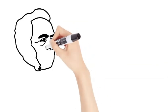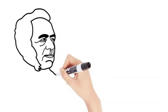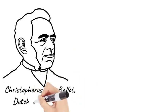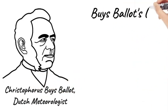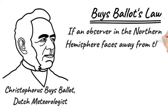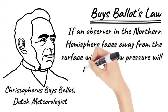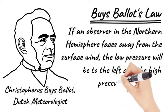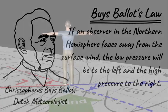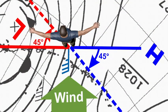Now that we've covered some basic storm characteristics, we can proceed with storm avoidance strategies. The first step is to estimate the direction of the storm center from the observer. This is best done using Buys-Ballot's Law, which states that if an observer in the Northern Hemisphere faces away from the surface wind, the low pressure will be to the left and the high pressure to the right. However, due to the Coriolis effect causing wind to deflect to the right, the low pressure could be within 45 degrees forward of the observer and the high pressure within 45 degrees aft of the observer.